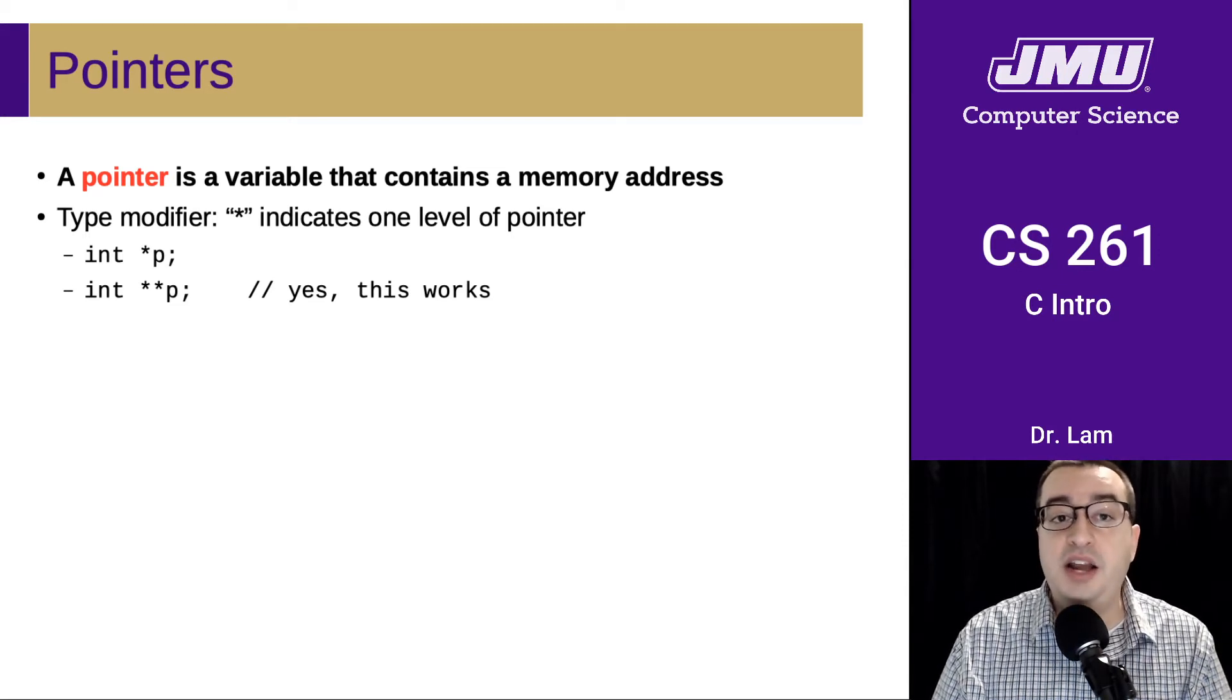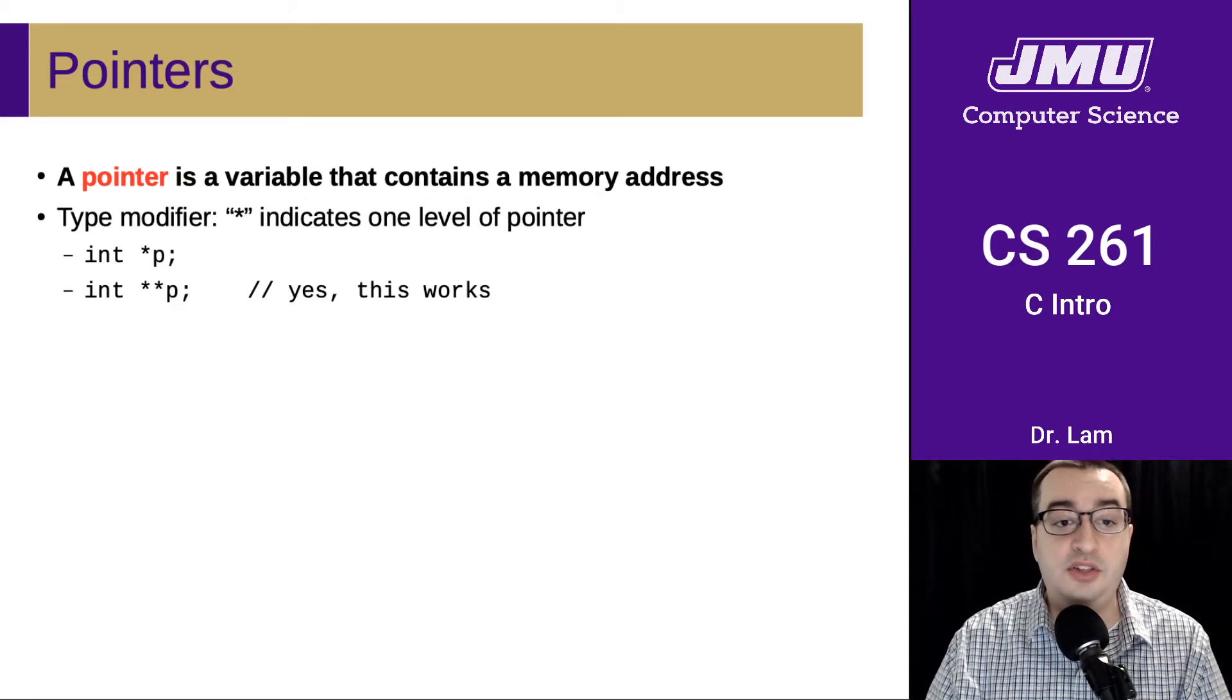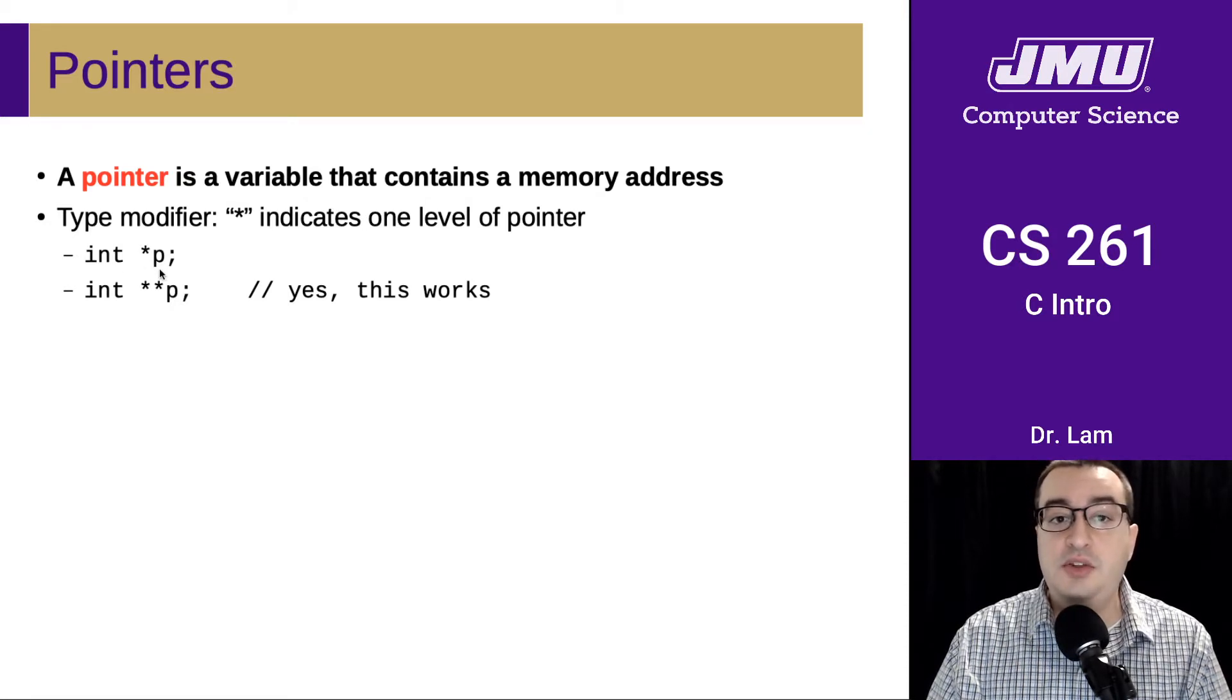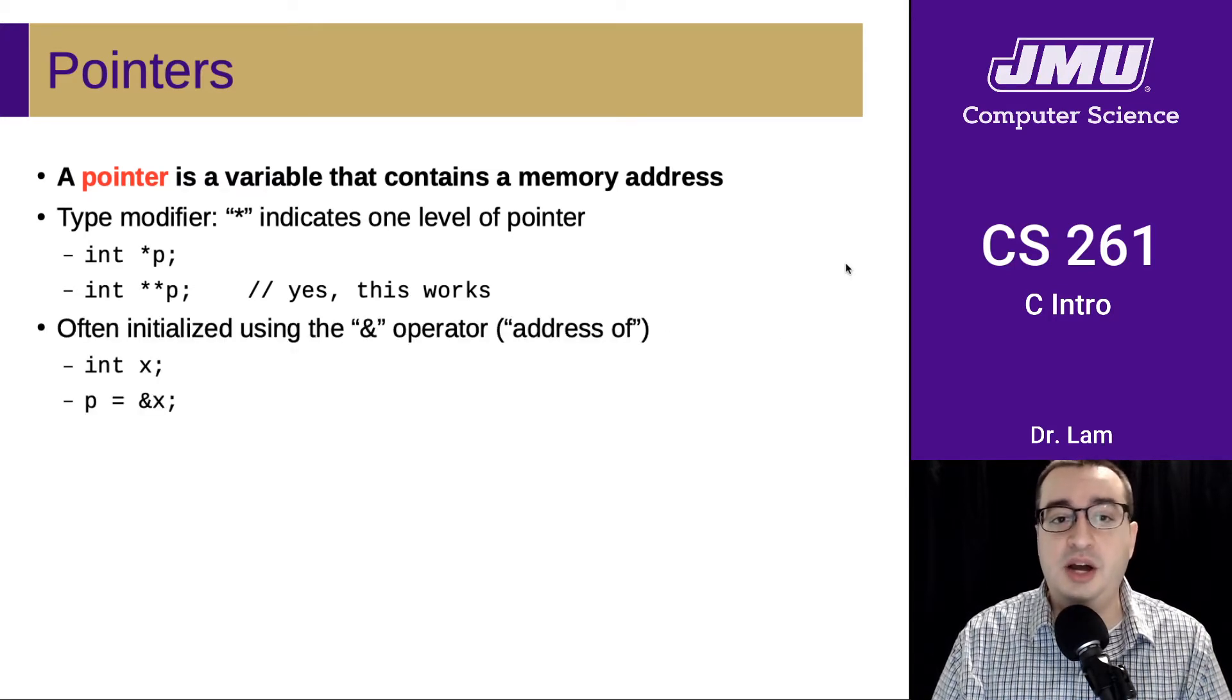There is a type modifier that we use in order to declare a pointer. So that is this asterisk. And so this declares that P is going to be a pointer to an integer. And in fact, we can also declare that P is going to be a pointer to a pointer to an integer. And so that's why this starts to get a little complicated.